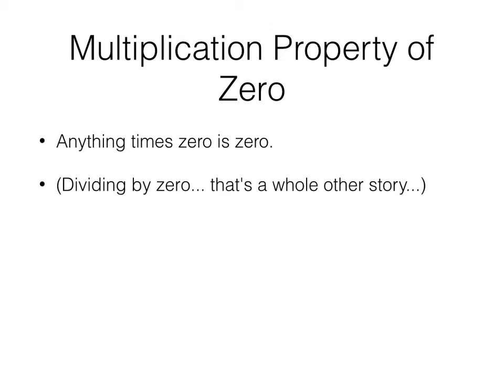Multiplication property of zero. Anything times zero is zero. Duh. I didn't write you an example for this one. There you go. Or, there you go. Anything times zero is zero.